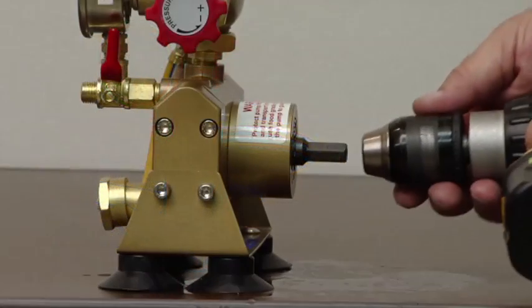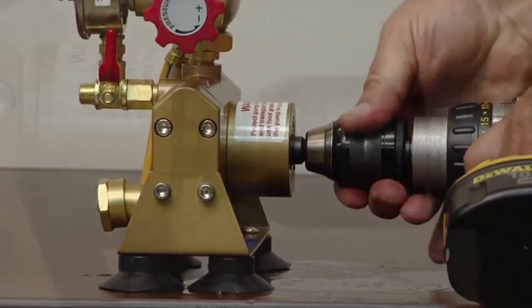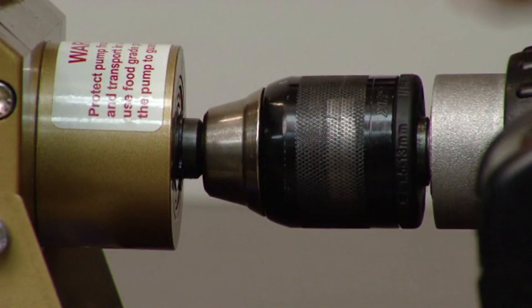Begin by attaching the drill motor to the shaft at the back of the pump. The pump can be run in either the clockwise or counterclockwise direction.